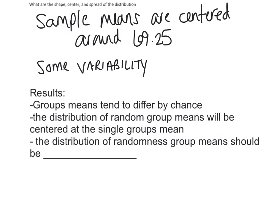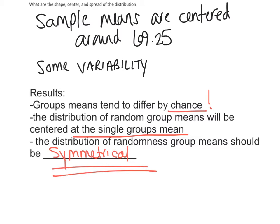So what are our results here? And this is kind of a big deal. We want to highlight these. Group means tend to differ by chance. The distribution of random group means will be centered at the single group means. Just like we saw there, most of them are centered around that 69.25. And the distribution of random sample group means should be symmetrical. Okay, and that's key. I'm going to show you a bunch of diagrams. And if they're symmetrical, then you know they're correct here.